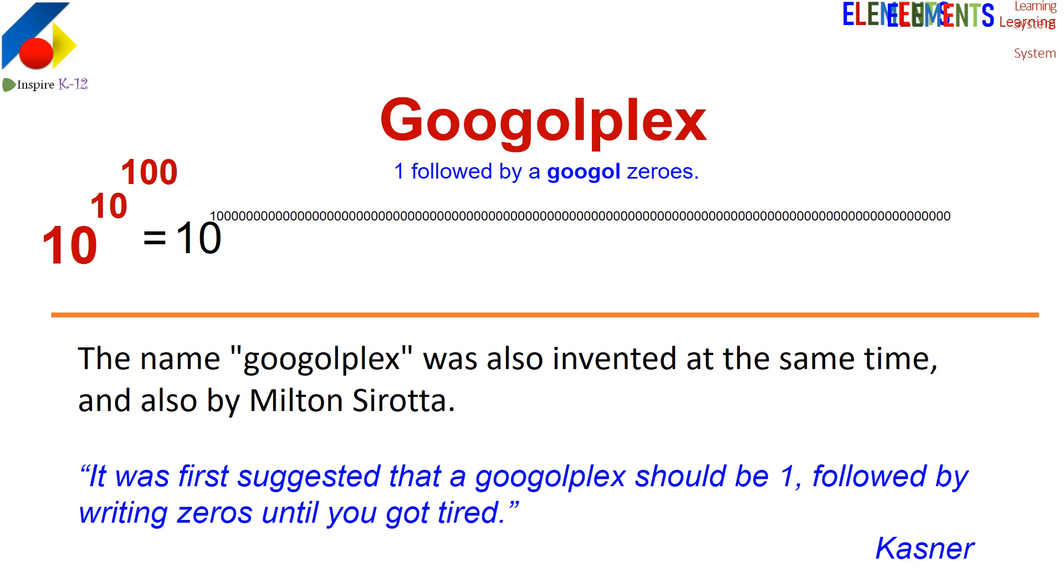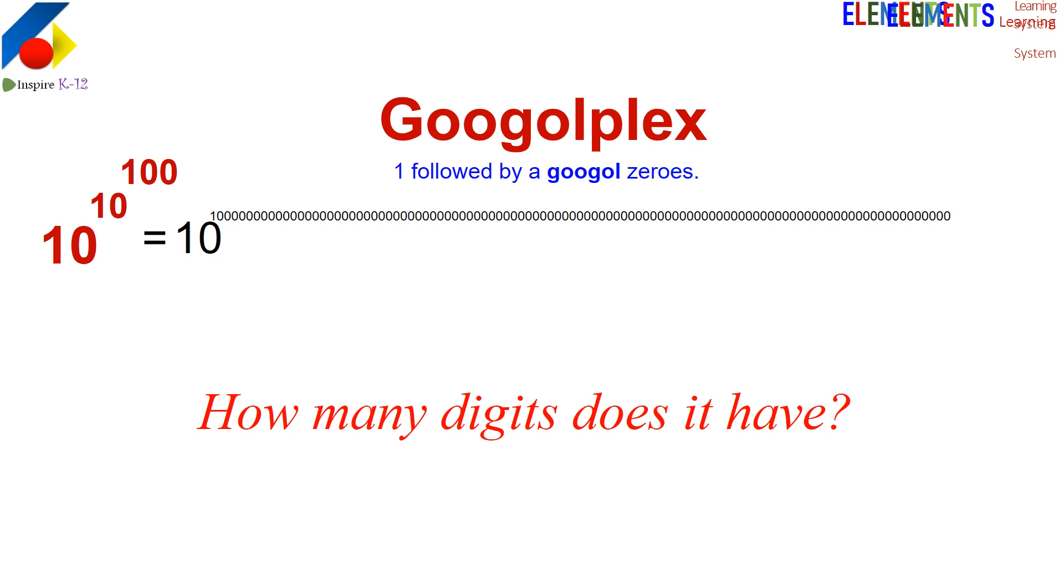There is a number called googolplex - one with googol zeros. There's also kiloplex, one with a thousand zeros, and millionplex. Very interestingly, googolplex was named at the same time as googol. Kasner wrote it very humorously: 'It's such a big number - one followed by writing zeros until you get tired.' And it's true.